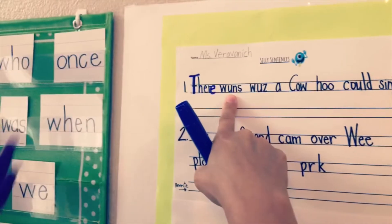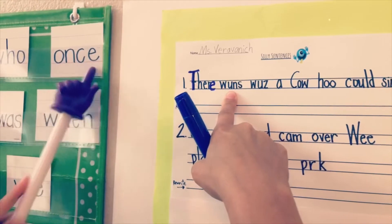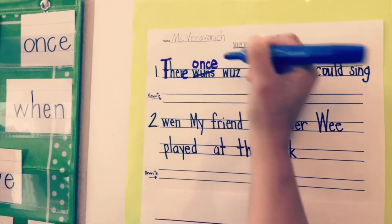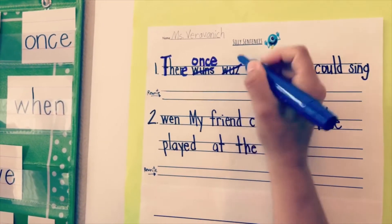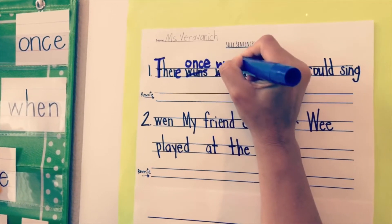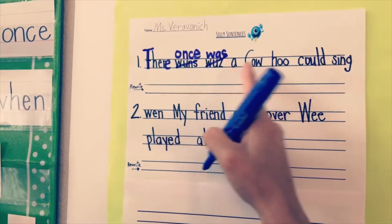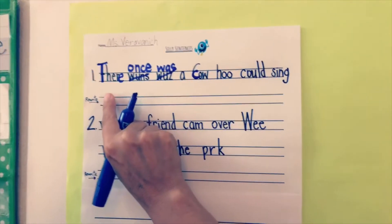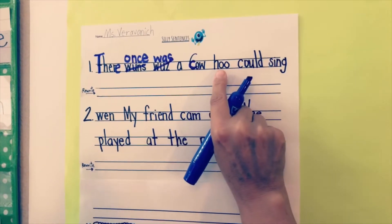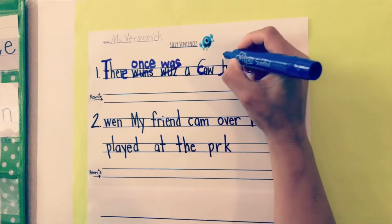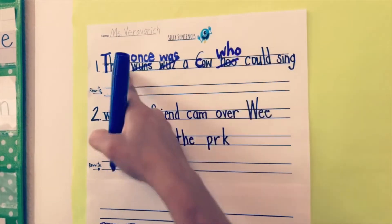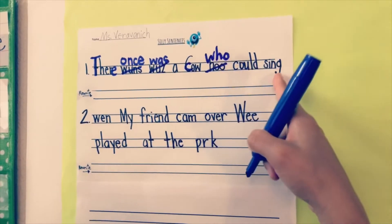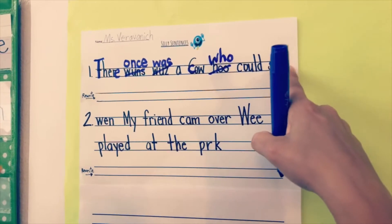Is that how you spell 'once'? No — it's o-n-c-e. Cross that out and write it correctly: o-n-c-e. 'There once was' — that's not right, you need to correct that: w-a-s, was. Should there be a capital letter in the middle of a sentence? Nope — make it lowercase. 'There once was a cow' — is that how you spell 'who'? No, it's w-h-o. 'Could' — is that spelled correctly? Yes. And 'sing' — is that spelled correctly? Yes, but what did we forget? We need to add a period.